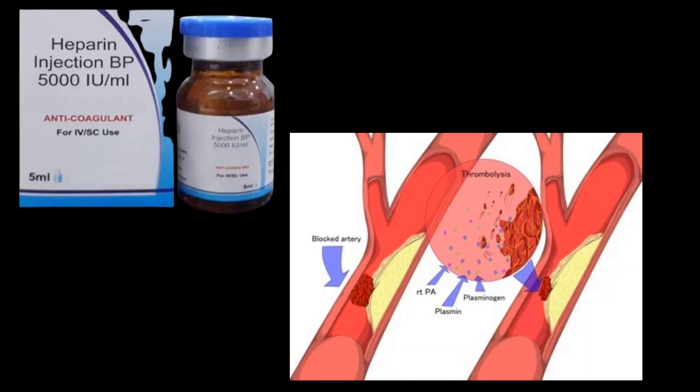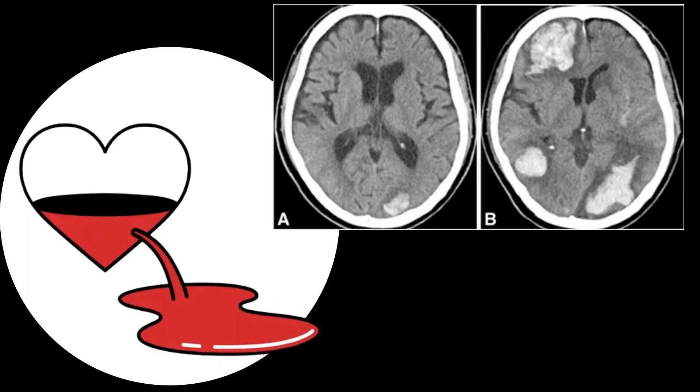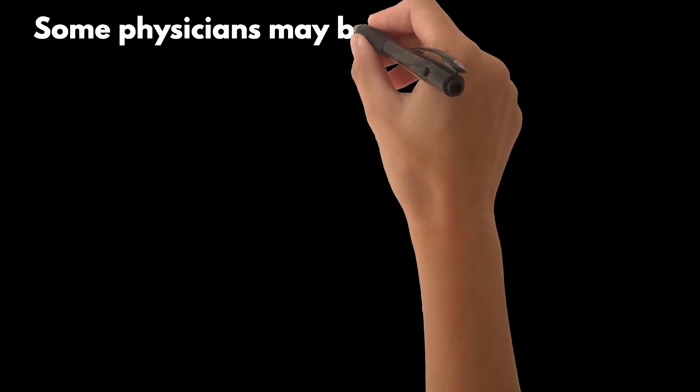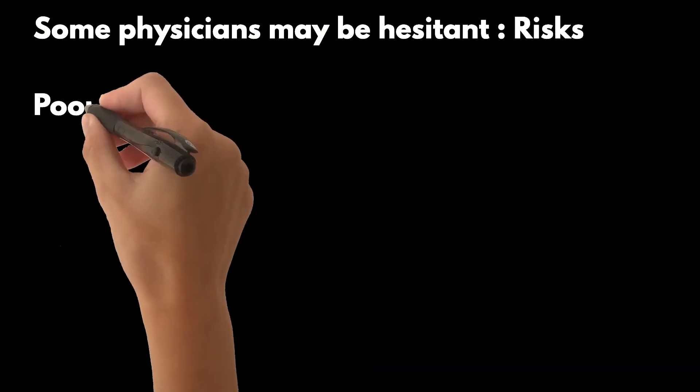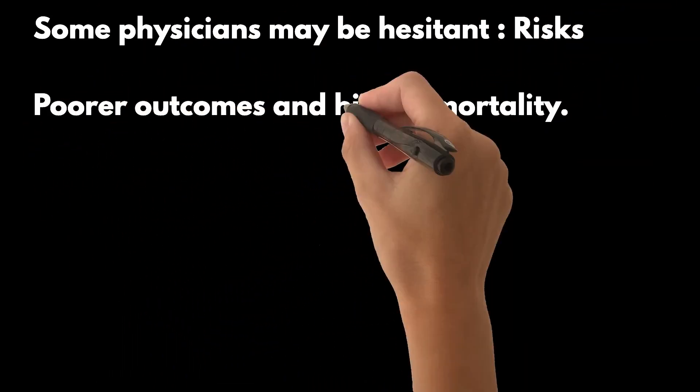High-risk PE patients require immediate reperfusion therapy, followed by therapeutic anticoagulation using unfractionated heparin. International guidelines recommend standard-dose systemic thrombolysis, which is associated with rapid resolution of the thrombus and improved pulmonary artery pressures. However, it also carries a significant risk of major bleeding, including intracranial hemorrhage. Some physicians may be hesitant to administer systemic thrombolysis due to these risks, potentially leading to poorer outcomes and higher mortality.